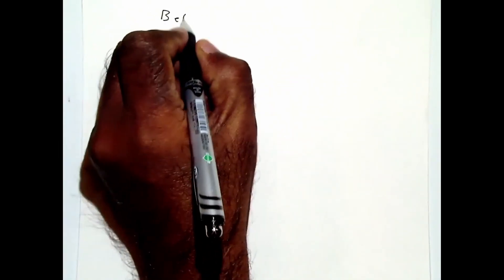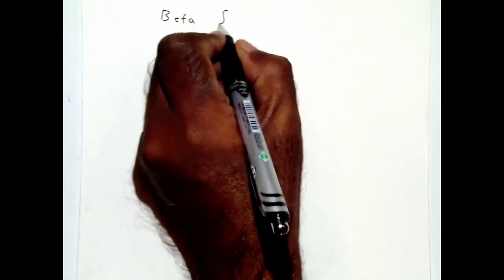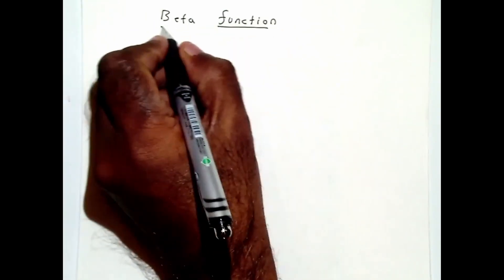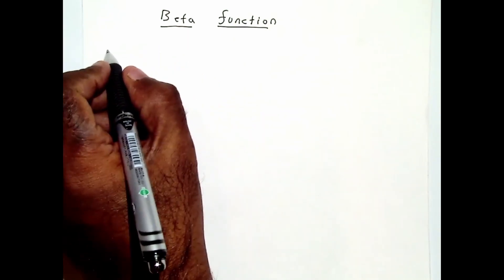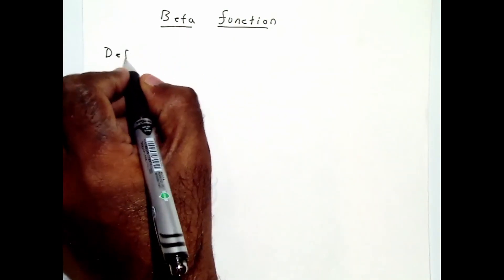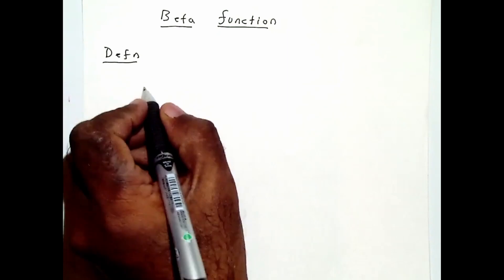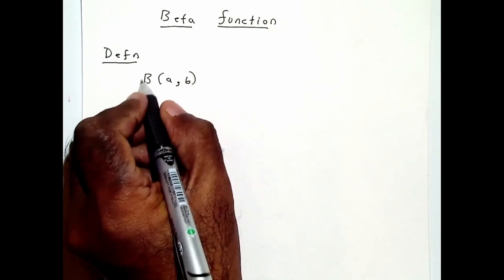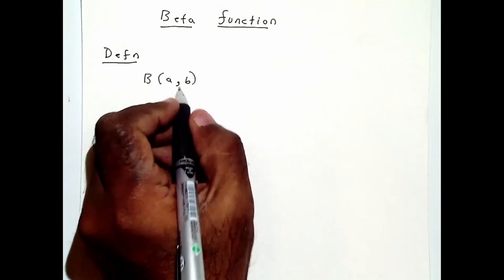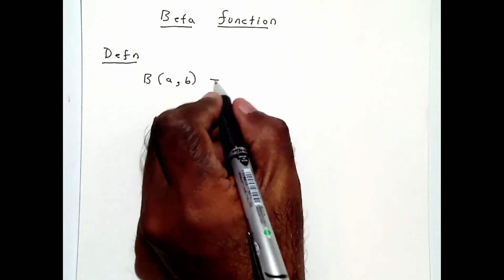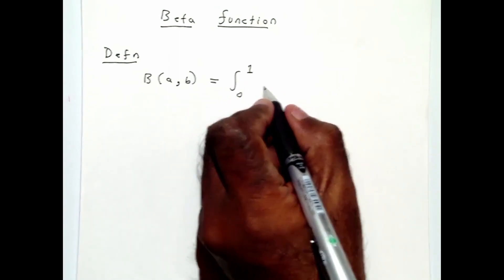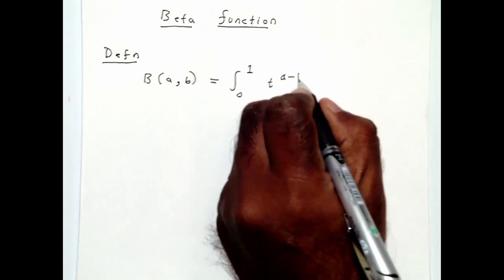This is a video on the beta function which will be useful in the course. The beta function is defined by the following notation: B, capital B, with two arguments a and b, and is defined as the integral from 0 to 1 of t^(a-1)(1-t)^(b-1) dt.